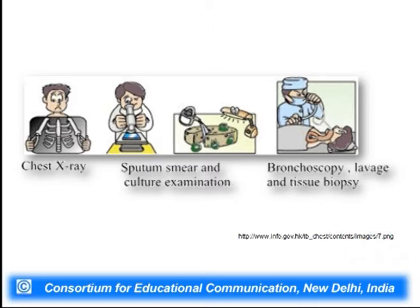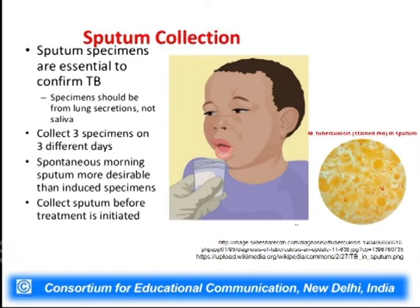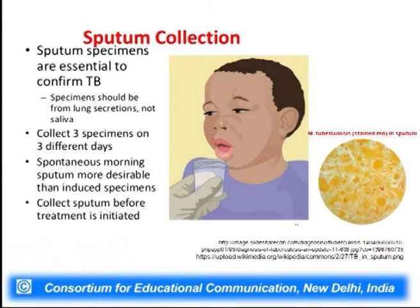The diagnostic or detection methods for tuberculosis include chest X-ray as the initial check, sputum tests and culture examinations, bronchoscopy, and tissue biopsy to further reconfirm which type of tuberculosis a person is suffering from. In the sputum test, it is essential to confirm tuberculosis before giving the person tuberculosis drugs, since these drugs are very toxic to our body and need to be monitored properly. Specimens are collected over three different days and slides are prepared and observed after staining under microscopes.